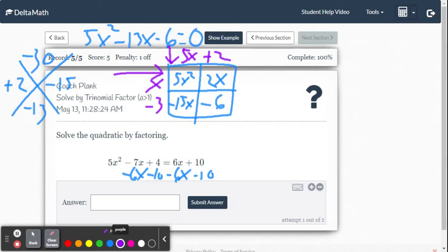All right, now we can write this equation out in factored form. So what we have is 5x plus 2 multiplied by x minus 3 has to equal 0.